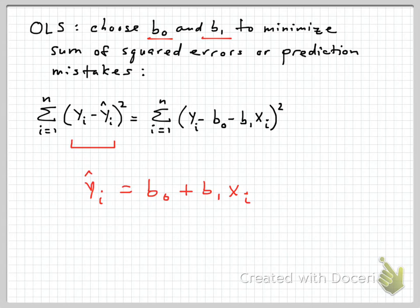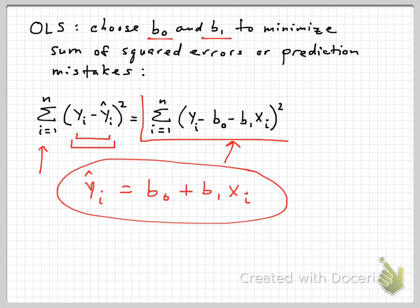It's just the intercept estimate plus the slope times the particular value of x for that observation. That's yi hat. Now, that may or may not be on target. Typically, it's not exactly right. And so there's going to be some difference here between the actual value y and the predicted value y hat. We take those deviations or mistakes, square them, and add them up over all n observations in the sample. And if we take this formula and substitute it in for y hat, we get this alternative. And this is the thing that we're going to take and try to minimize. And we need to choose the values of b0, the intercept, and b1, the slope, to make that overall sum as small as possible.